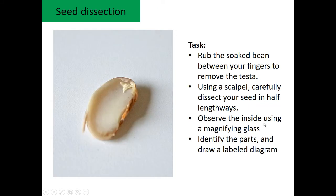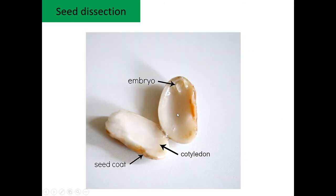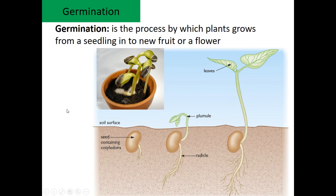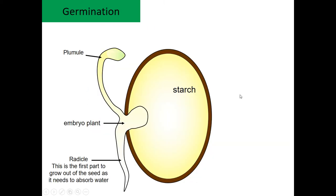You're going to do a dissection — you'll have a seed and look to find different parts such as the embryo, seed coat, and various other parts of the seed. You're also going to have a look at defining germination. Here are some plants that are germinating, and this is what it would look like underground. Germination is the process by which a plant grows from a seedling into a new plant.